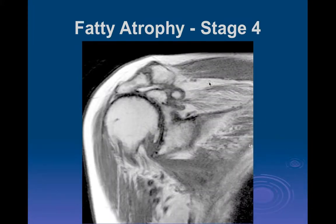Here's stage four—almost complete replacement of the supraspinatus muscle with fat. There's a tear with proximal retraction, superior migration of the humeral head, a lot of eburnation and marginal osteophytes, complete denudation of the articular cartilage with eburnation and subchondral cysts. This is really more of an end-stage shoulder.